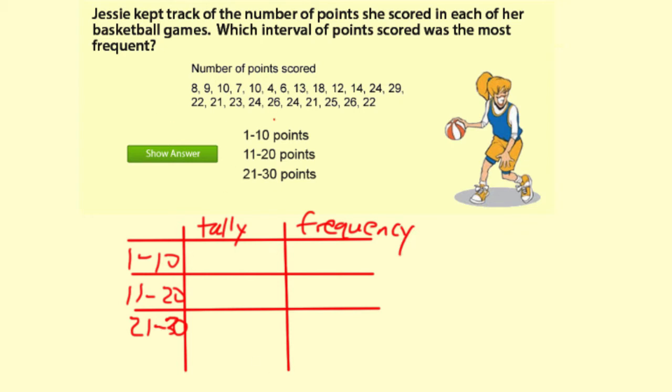So what I'm going to do is go through the list here and make a tally mark in each interval for each number. For example, the first number is 8, which is 1 through 10, so I'll put one mark there. And then 9, and then 10, and then 7, and then 10 again, and then 4, and then 6.